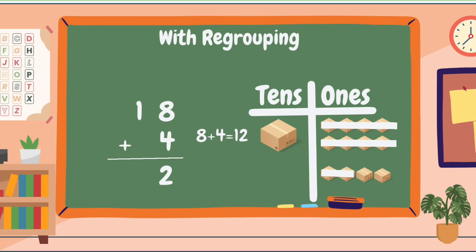We know that 12 has two digits, which means it has tens and ones. So we are going to put the 2 aligned with the ones digits, which is under the 4. Then we are going to carry the 1 over the tens, which is 1. Now let us add the tens: 1 plus the carry 1 equals 2. So the sum of 18 plus 4 is 22.